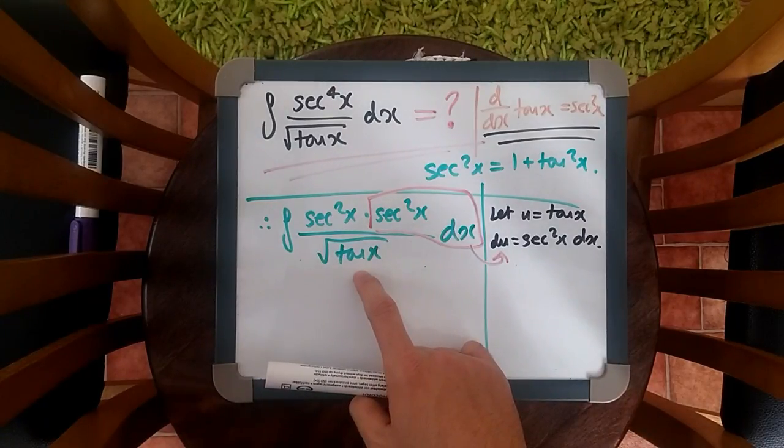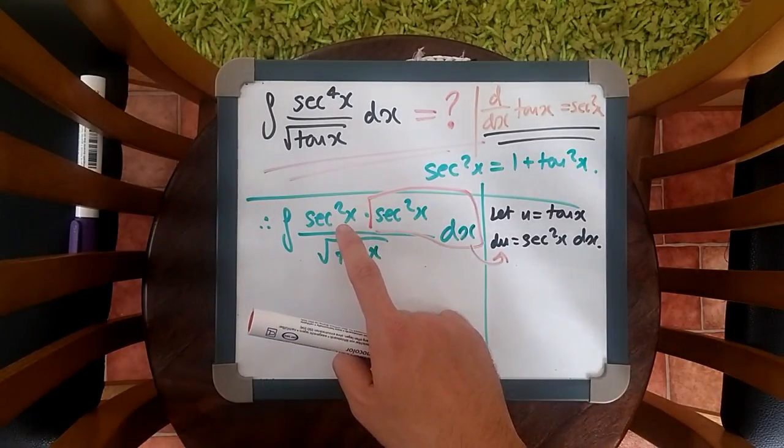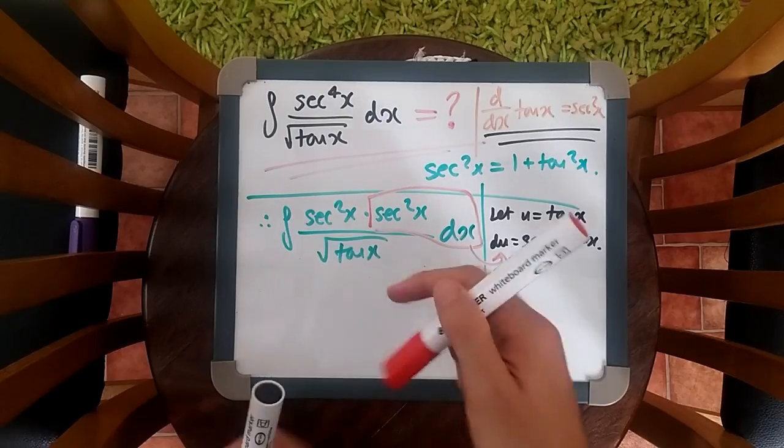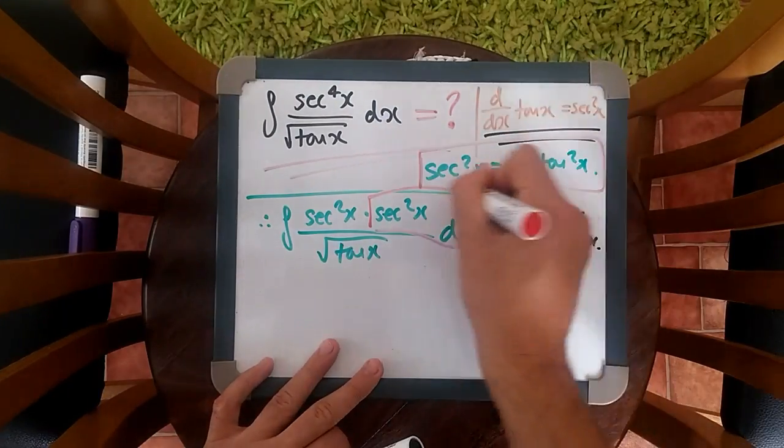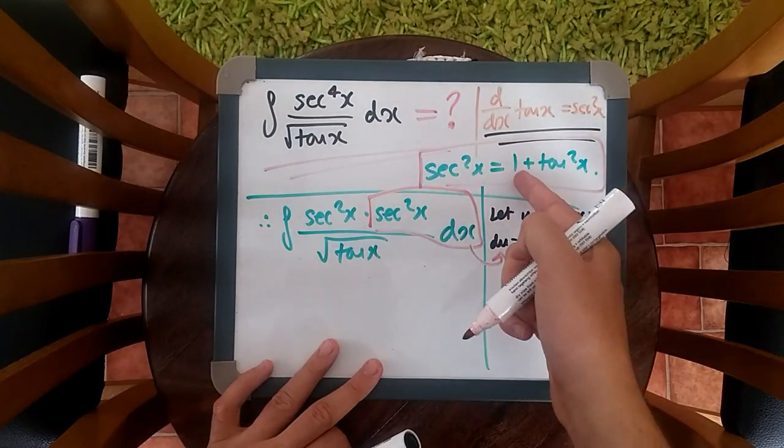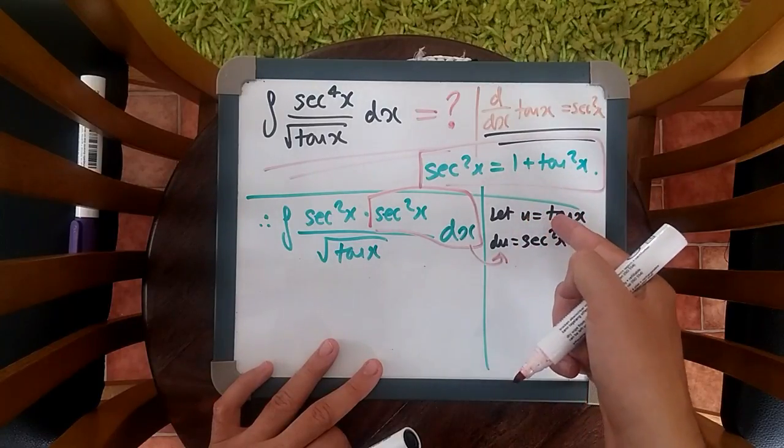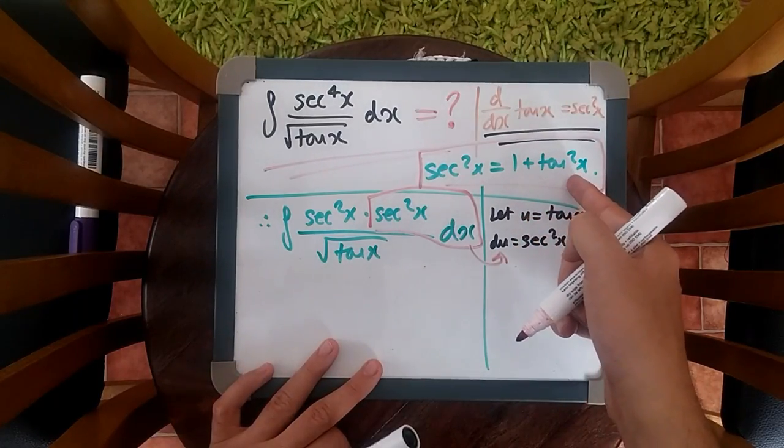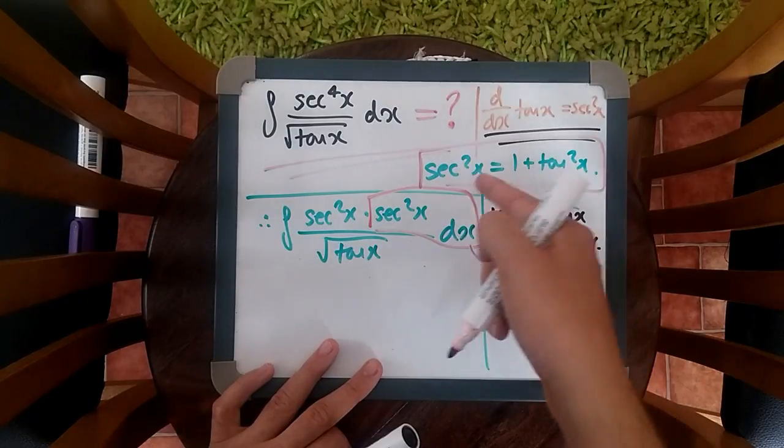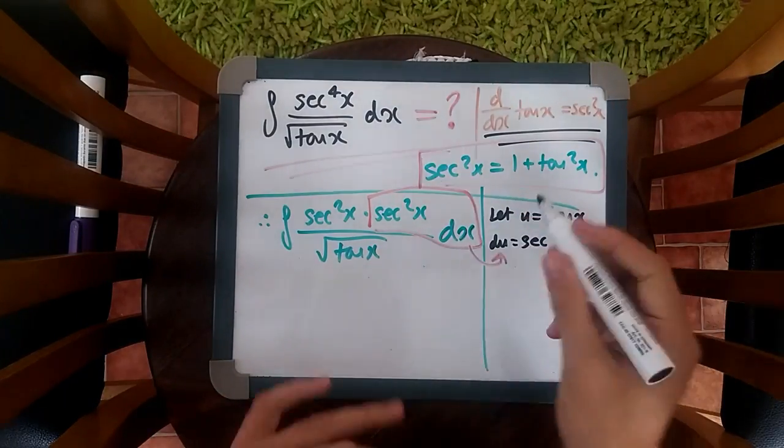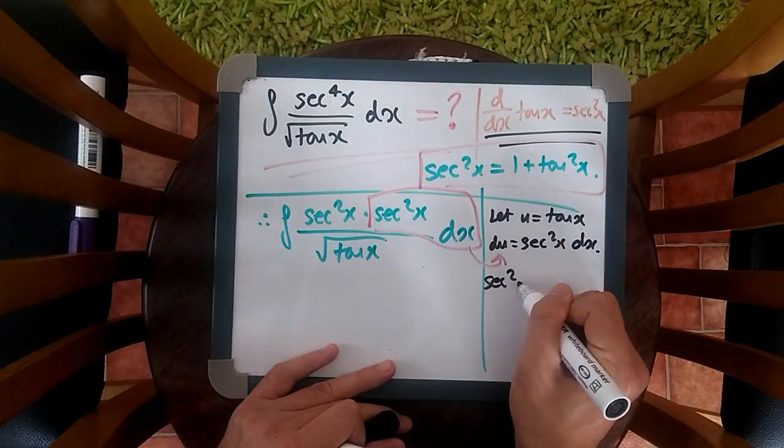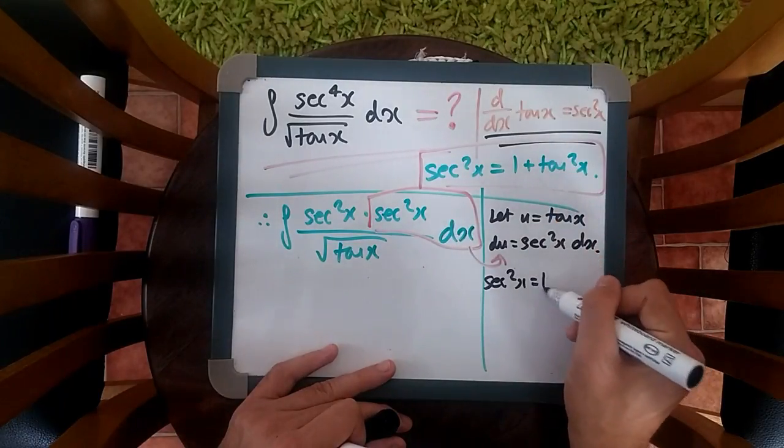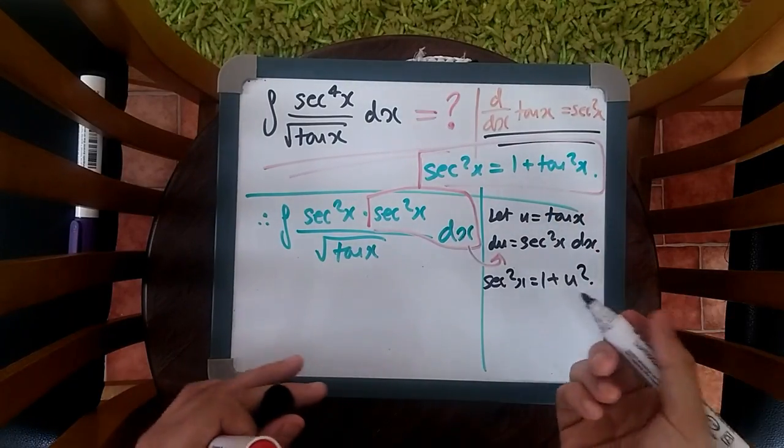And now this one becomes u, root u. However, we still got sec squared here. But, now we look at this equation here, guys. We know that sec squared also equals one plus tan squared. And we know since u is tan, therefore tan squared is u squared. So we have one plus u squared would be sec squared. So over here we can say, sec squared x equals one plus u squared. And that's it, guys.